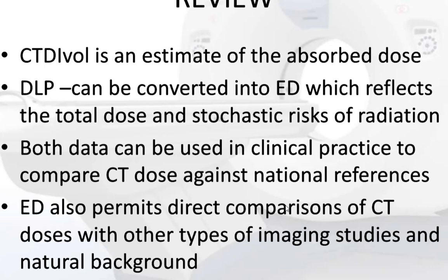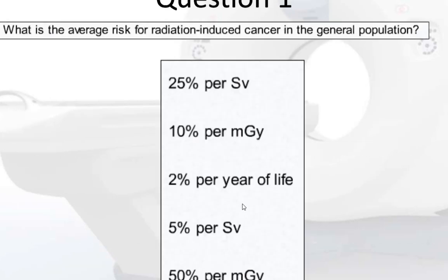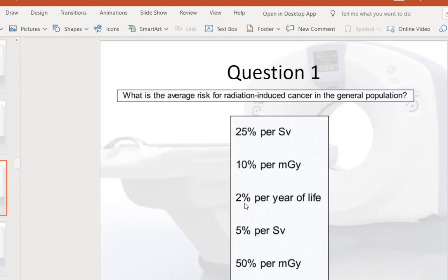In review: CTDI volume is an estimate of the absorbed dose. DLP can be converted into effective dose, which reflects total dose and stochastic risks of radiation. Both data can be used in clinical practice to compare CT dose against national references. Effective dose permits direct comparisons of CT doses with other types of imaging studies and natural background. A separate quiz for the physics questions will be available. Thank you.